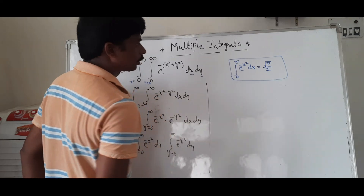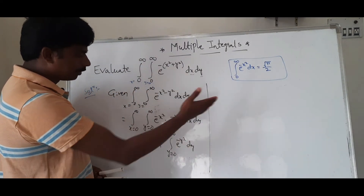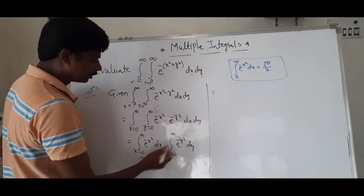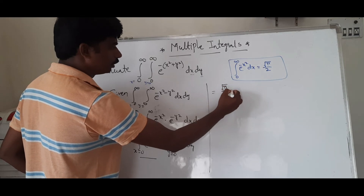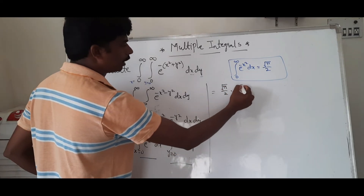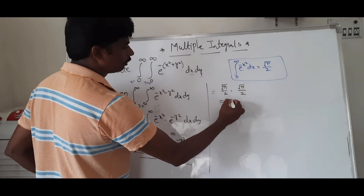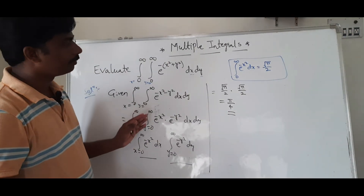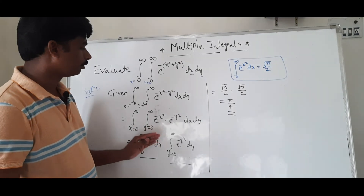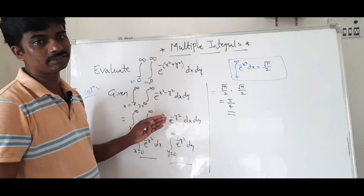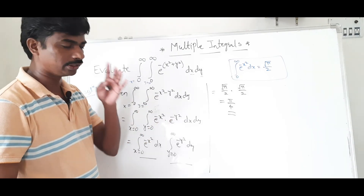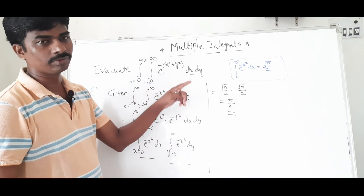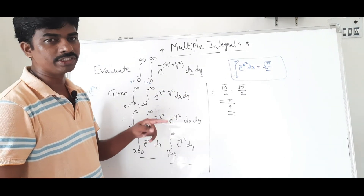By the beta-gamma relation, this value is root pi by 2. So root pi by 2 into root pi by 2 equals pi by 4. This is the answer. For the same problem in polar coordinates, we use x equal to r cos θ, y equal to r sin θ, and dx dy equals r dr dθ.